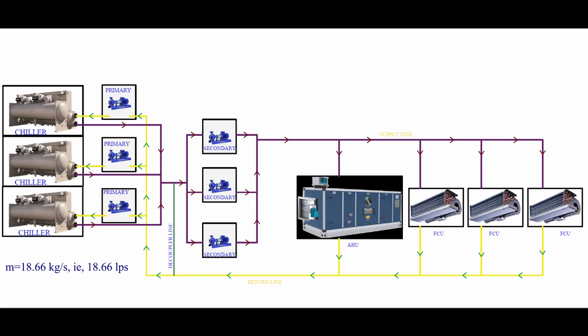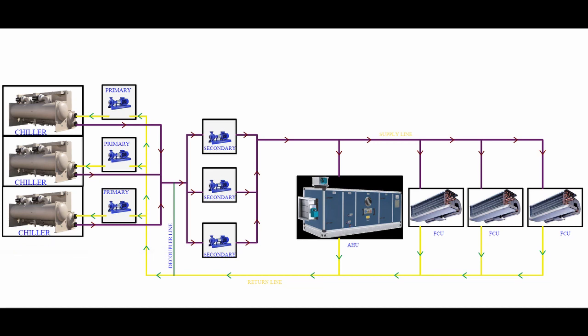Water is the standard fluid, so the volume flow rate and the mass flow rate of water are the same. The volume flow rate of water required is 18.66 liters per second. So it is clear that each chiller is able to extract 200 tons of refrigeration from the building with 18.66 liters per second of volume flow rate. In the same way, all the equipment in this loop will have a coil load, flow rate, and delta T.